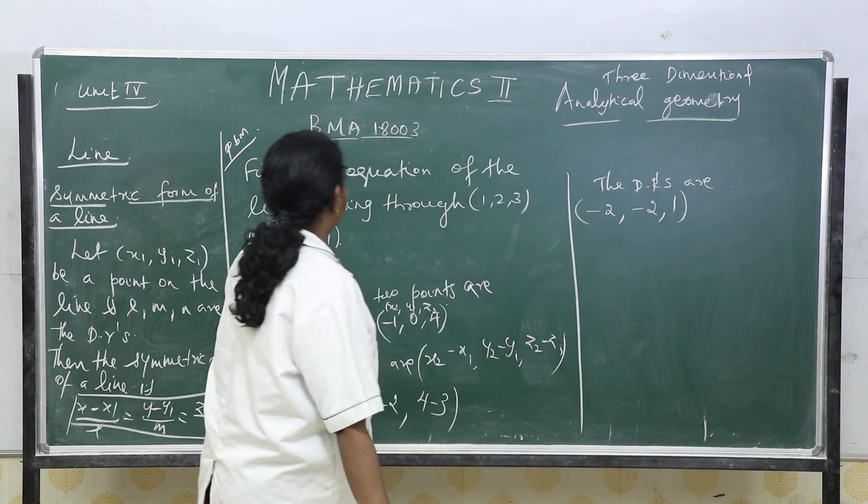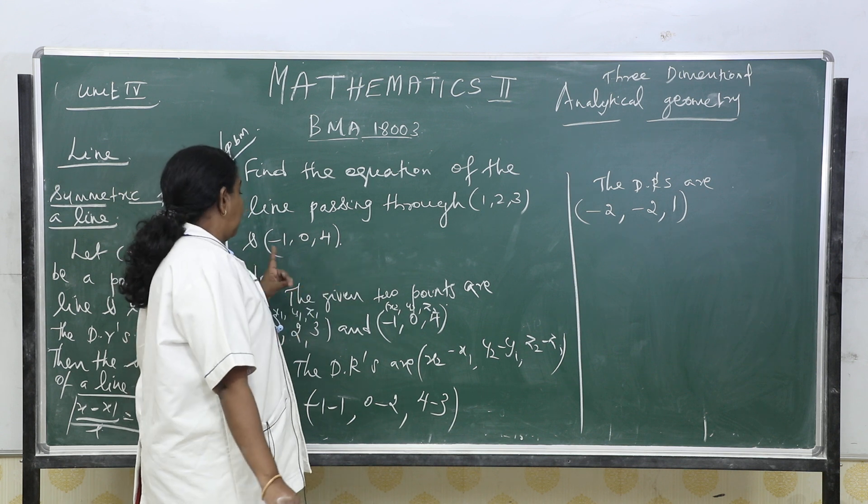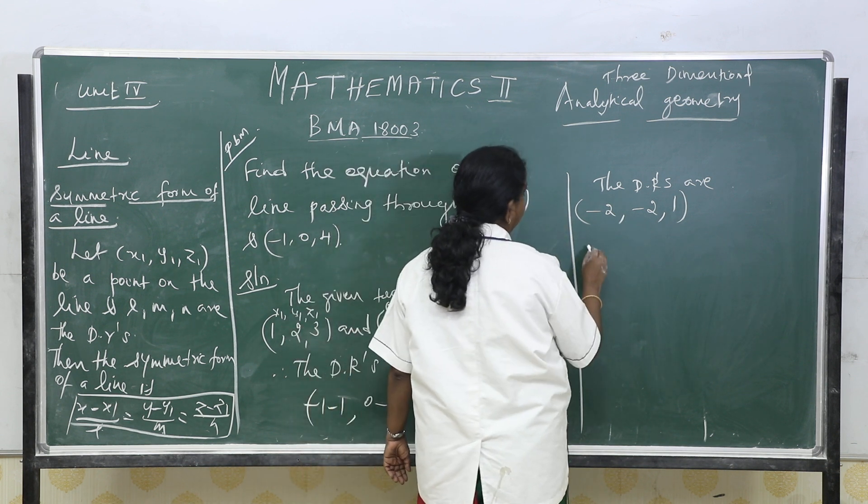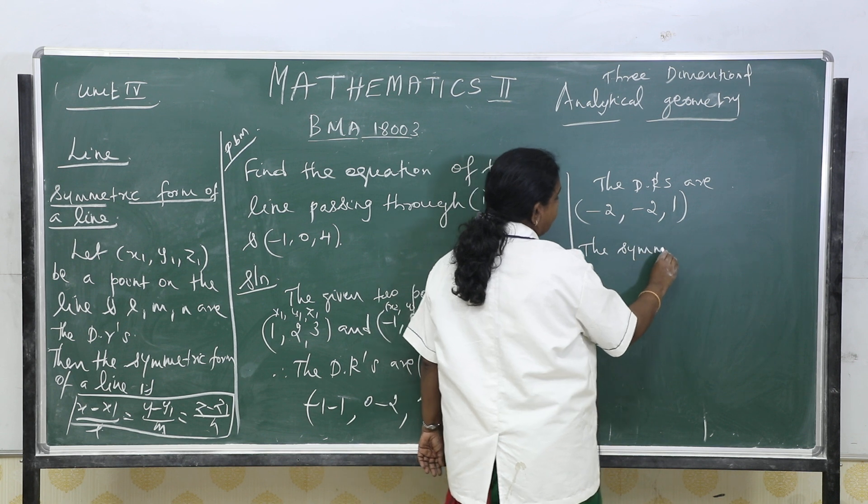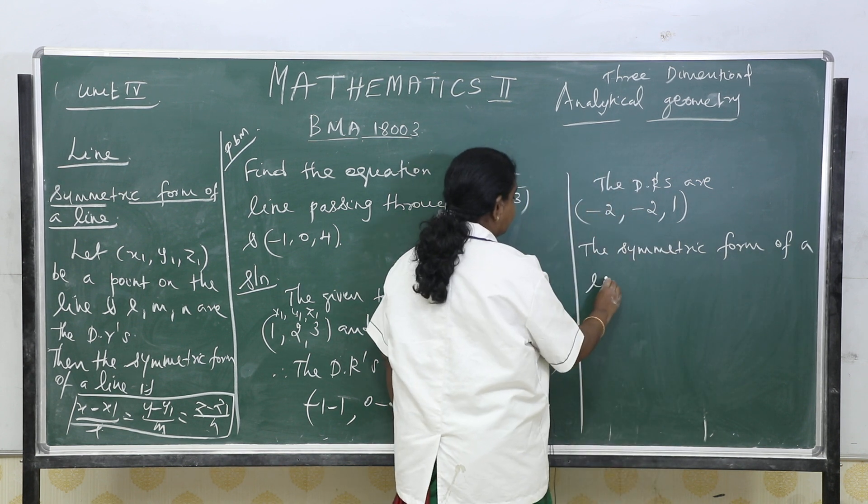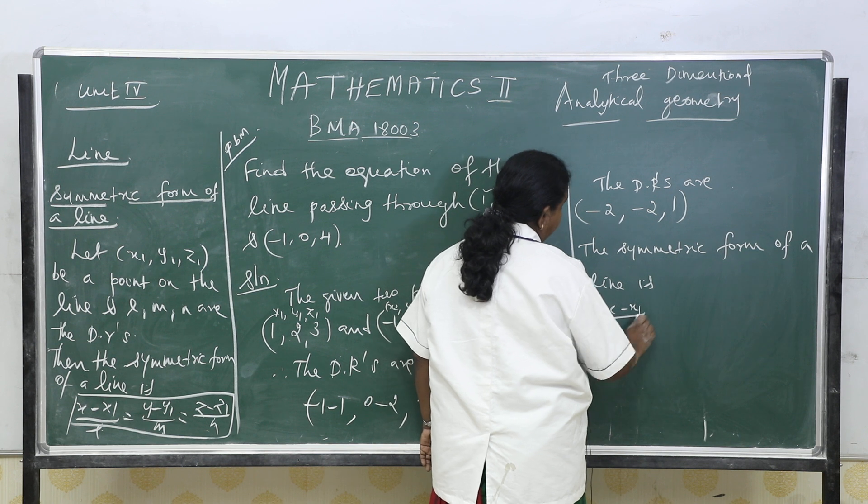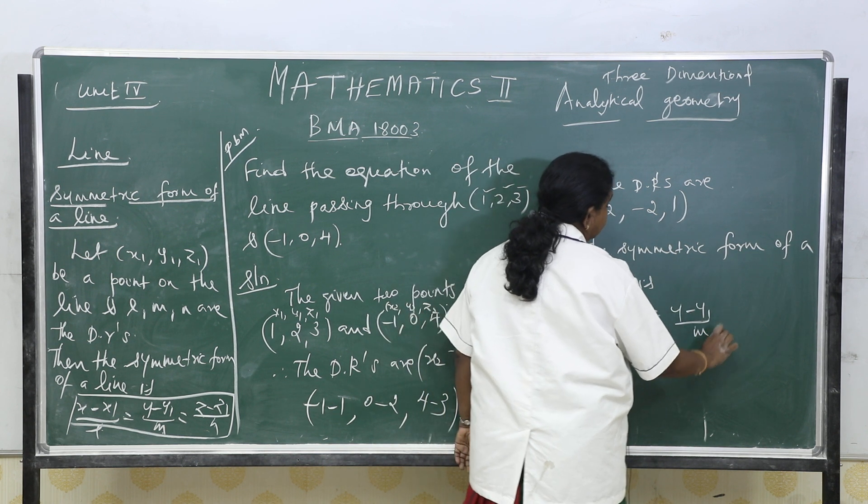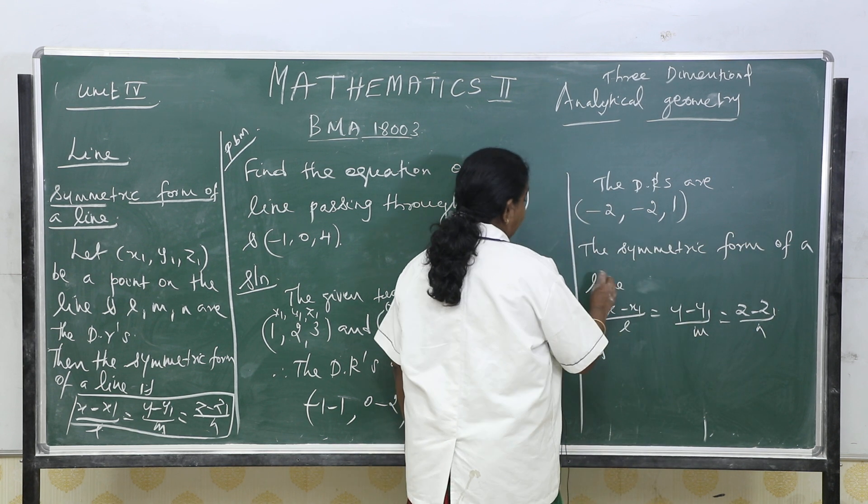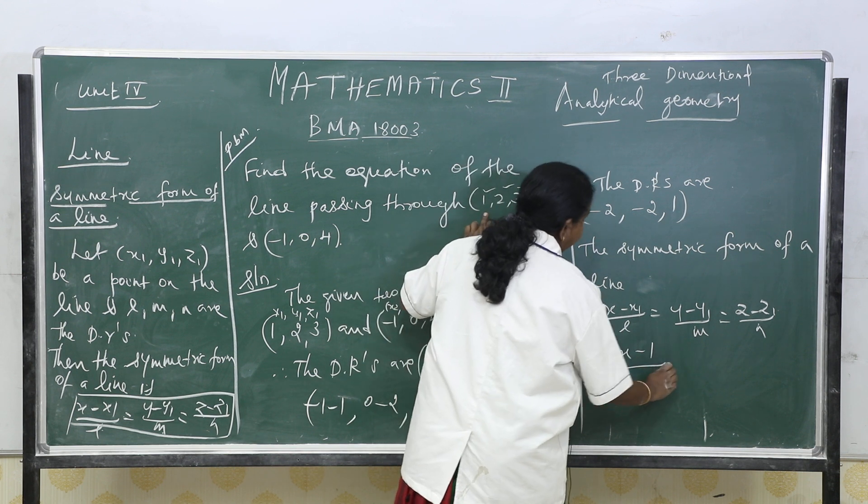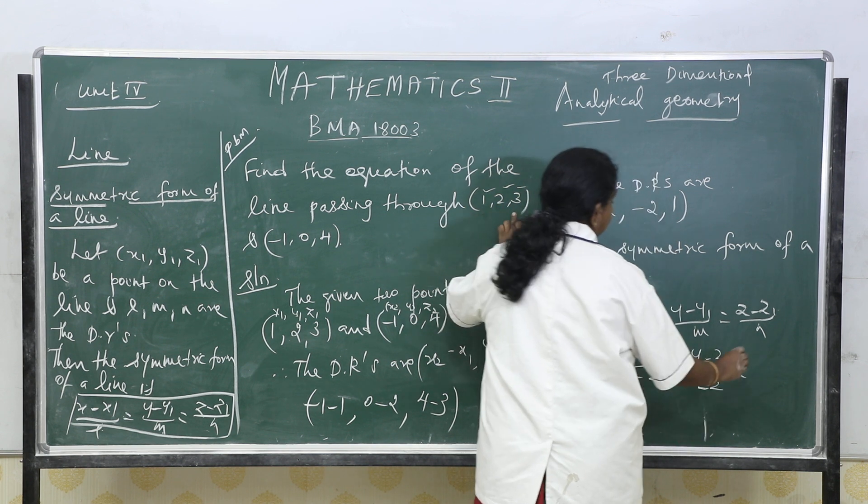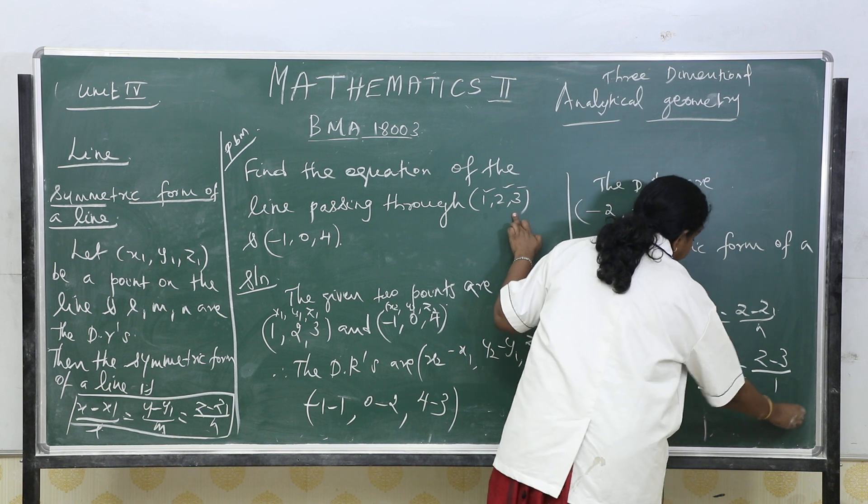Now, to find out the equation of a line, we need one point and the direction ratio. Direction ratio we have already found. We will take this point as x1, y1, z1. Therefore, the symmetric form of a line is x minus x1 by L equals y minus y1 by M equals z minus z1 by N. So, the symmetric form is x minus 1 divided by -2 equals y minus 2 divided by -2 equals z minus 3 divided by 1. Thank you.